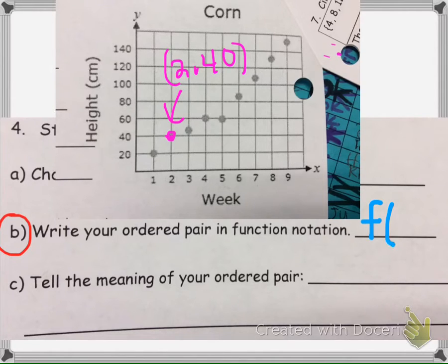So if I input for my X, if I input a 2, okay, so this is X. So just like F of X, right? So I'm replacing the X with the number for the point I picked, which is 2. Then my output, my Y here, is 40.